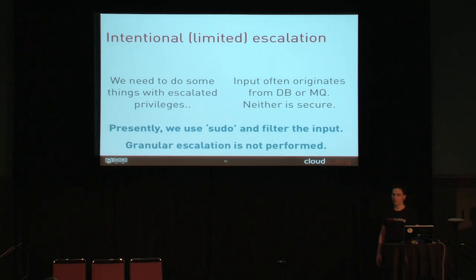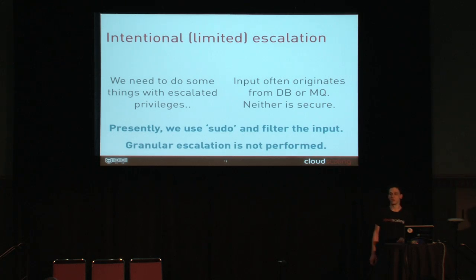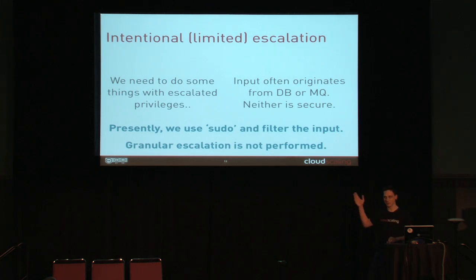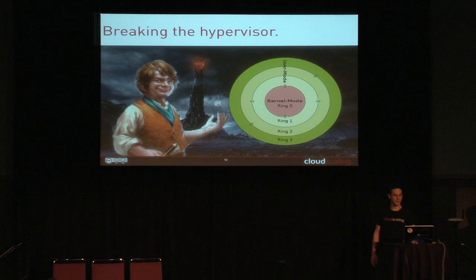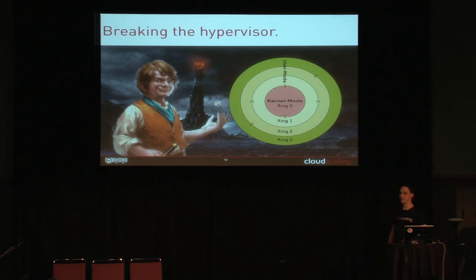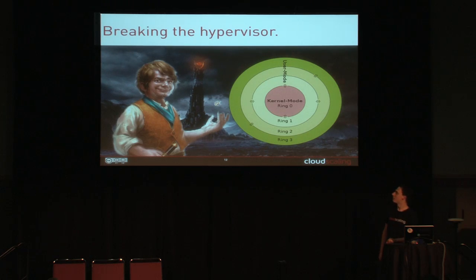There's the intentional limited escalation that we do in root wrap. We need to do things with escalated privileges — that's done as root, not with system capabilities. The input usually originates from the database or the message queue, which are not secure. We do use sudo to filter the input with no granular controls. We can break the hypervisor and have ring escalation.